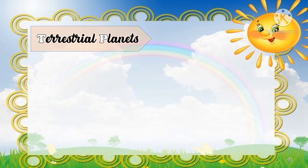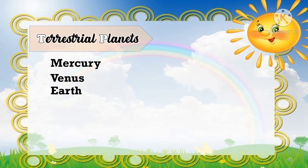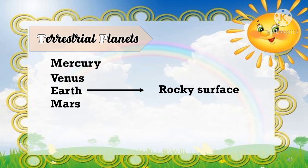Terrestrial planets — these are Mercury, Venus, Earth, and Mars. They are called terrestrial planets because, like Earth, these planets have a rocky surface.